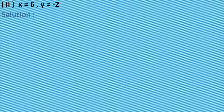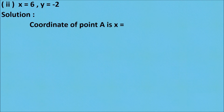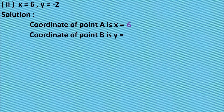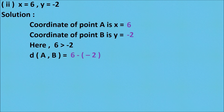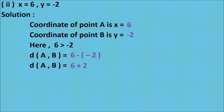Next part: X equals 6 and Y equals minus 2. The coordinate of A is 6 and the coordinate of B is minus 2. Since 6 is greater than minus 2, distance AB equals greater coordinate minus smaller coordinate, that is 6 minus (minus 2). Solving the bracket, minus into minus is plus, so 6 plus 2. Therefore, distance AB equals 8.